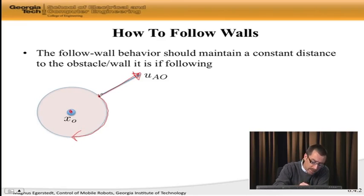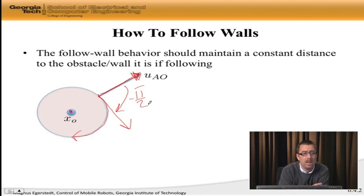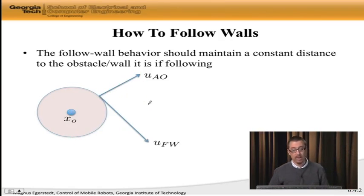What I really need to do then is take the direction given to me by my avoid obstacle behavior and flip it down like this. This is a negative π/2, or a negative 90 degree flip. So I need to flip it down by 90 degrees, like this.